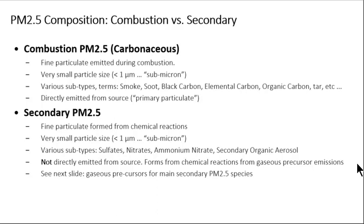Second, there is secondary PM2.5. This is fine particulate not directly emitted from sources, but rather formed from chemical reactions in the atmosphere from other pollutant gases that are emitted, similar to ground-level ozone studied in the last lecture. The pollutant gases that are emitted and chemically form into secondary PM2.5 are called precursors. Like combustion PM2.5, secondary PM2.5 are very small submicron particles that penetrate deeply into lungs. Among the main types of secondary PM2.5 are nitrates, sulfates, and secondary organic aerosol.